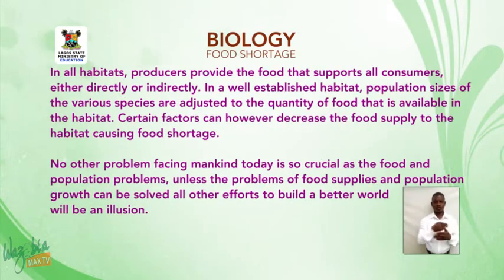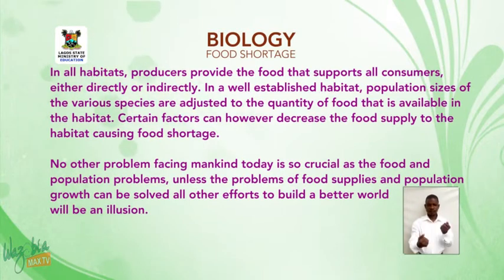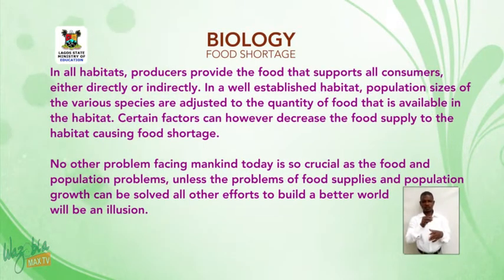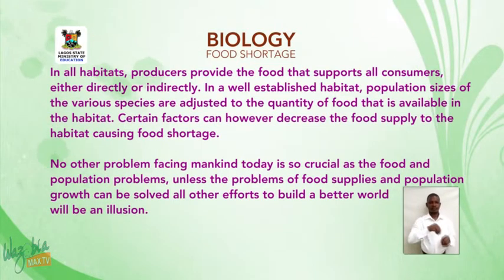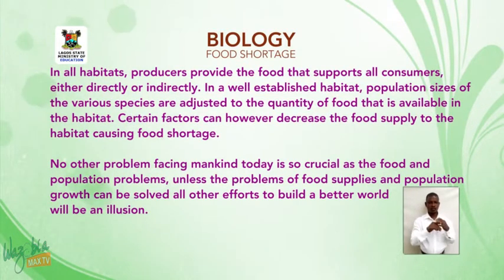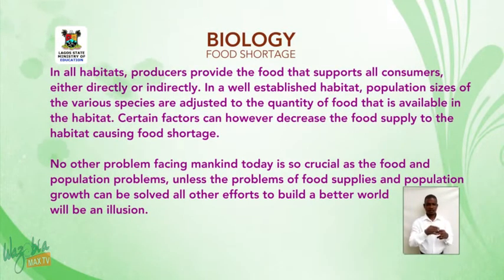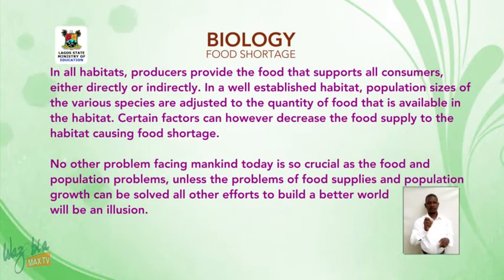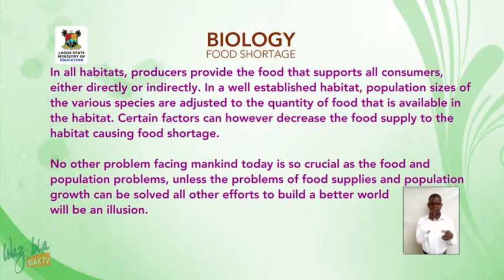In all habitats, producers provide the food that supports all consumers, either directly or indirectly. In a well-established habitat, population sizes of the various species are adjusted to the quantity of food that is available in the habitat. Certain factors can, however, decrease the food supply to the habitat, causing food shortage.